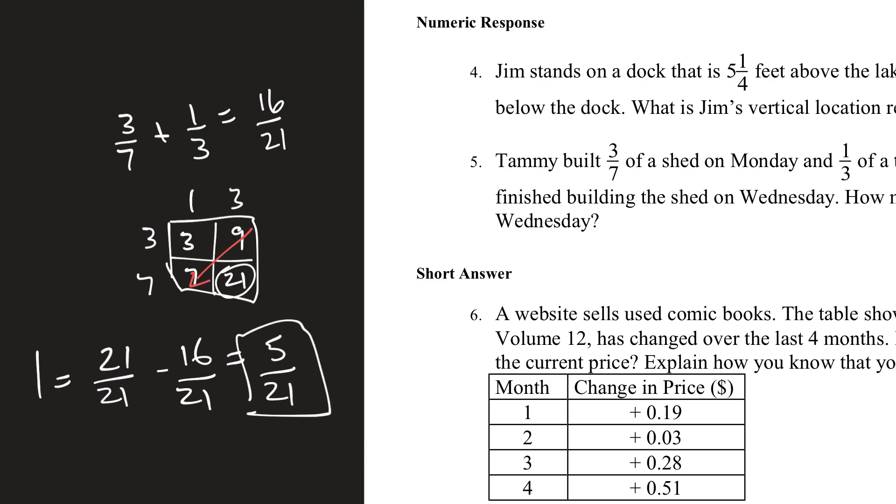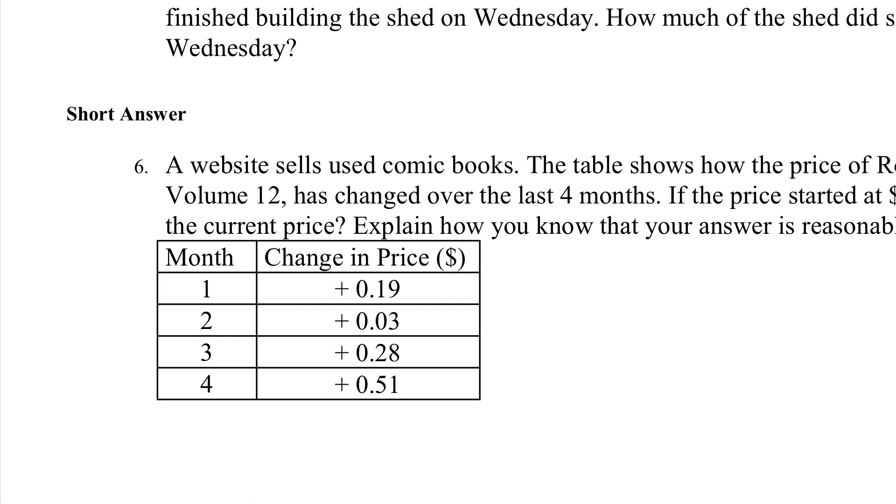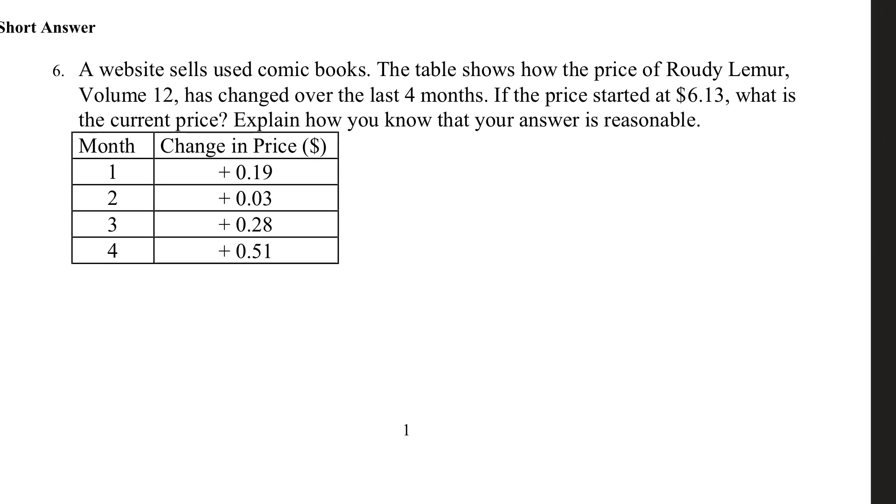Okay. The last question is this one here. A website sells used comic books. The table shows how the price of Rudy Lemur, Volume 12, has changed over the last four months. If the price started at 6.13, what is the current price? Explain how you know your answer is reasonable. Let's say it started at 6.13. And then it changed 19 cents. So, I'll add 19 cents. And that would be $6.32.